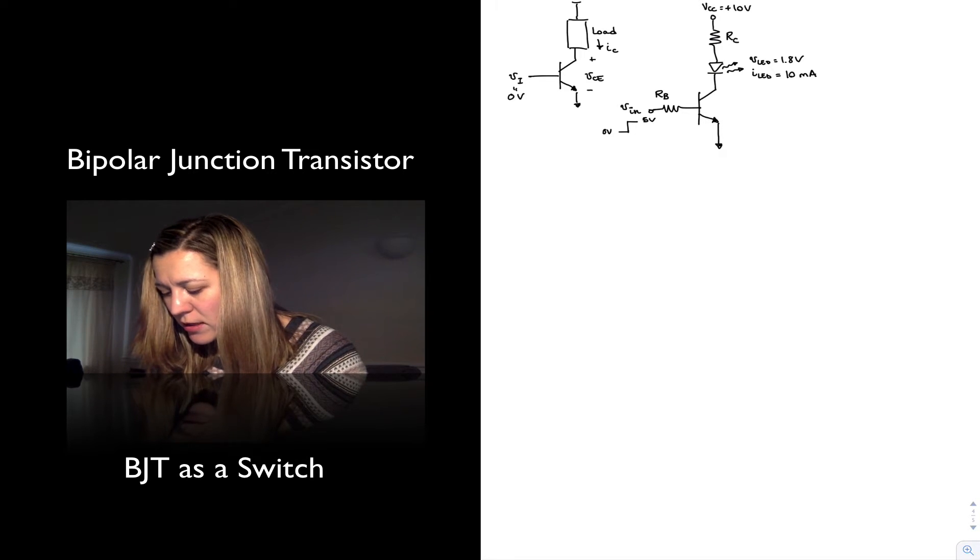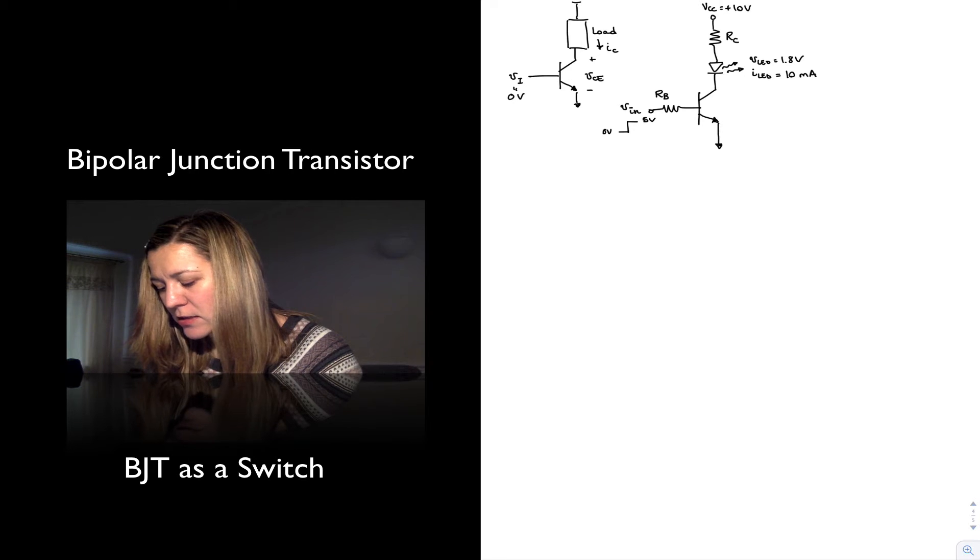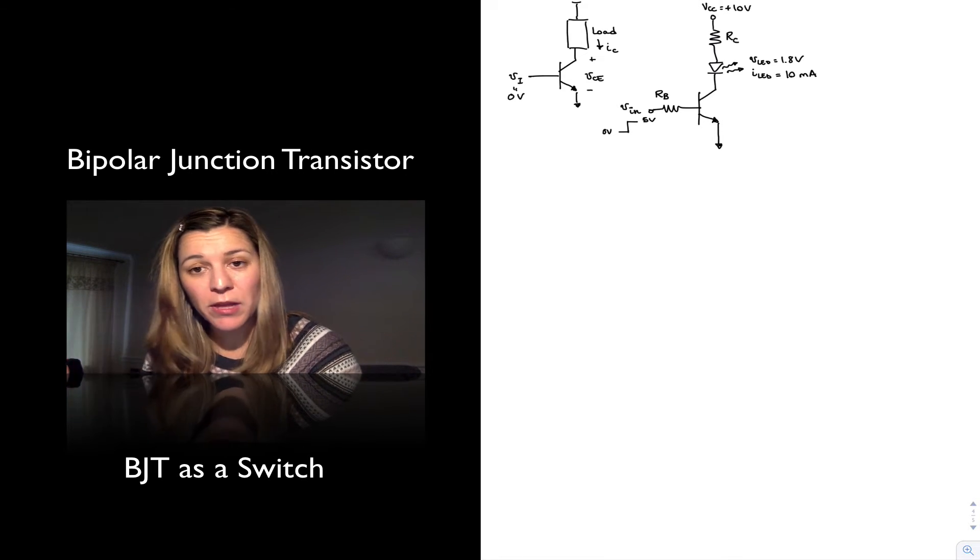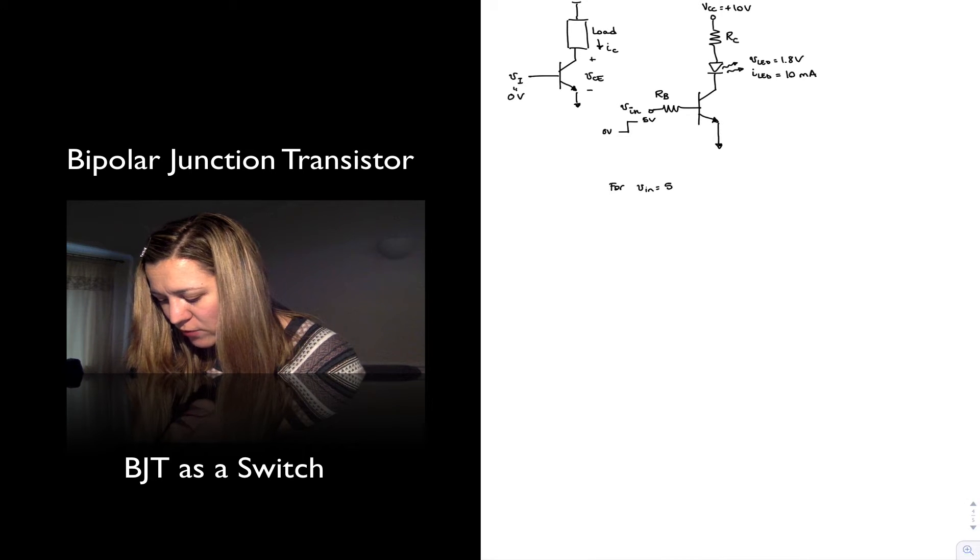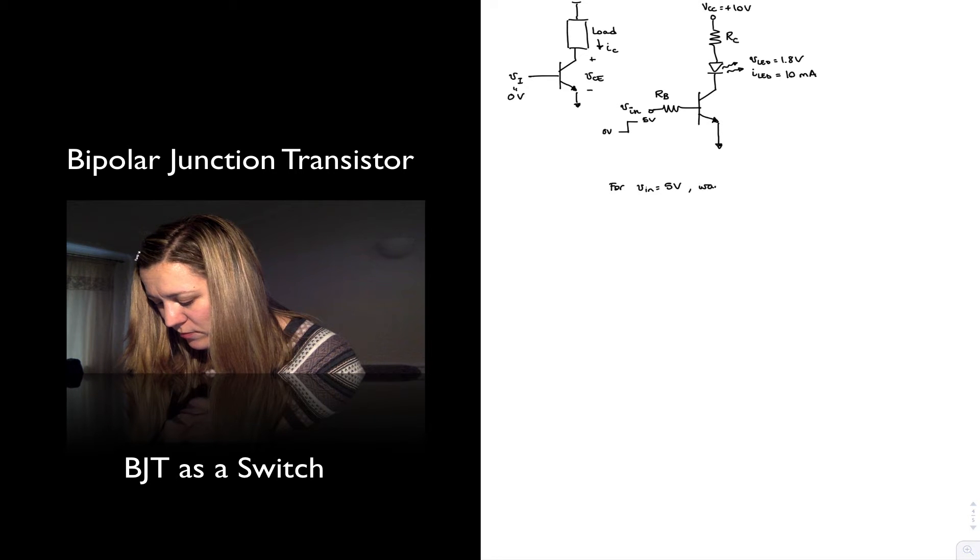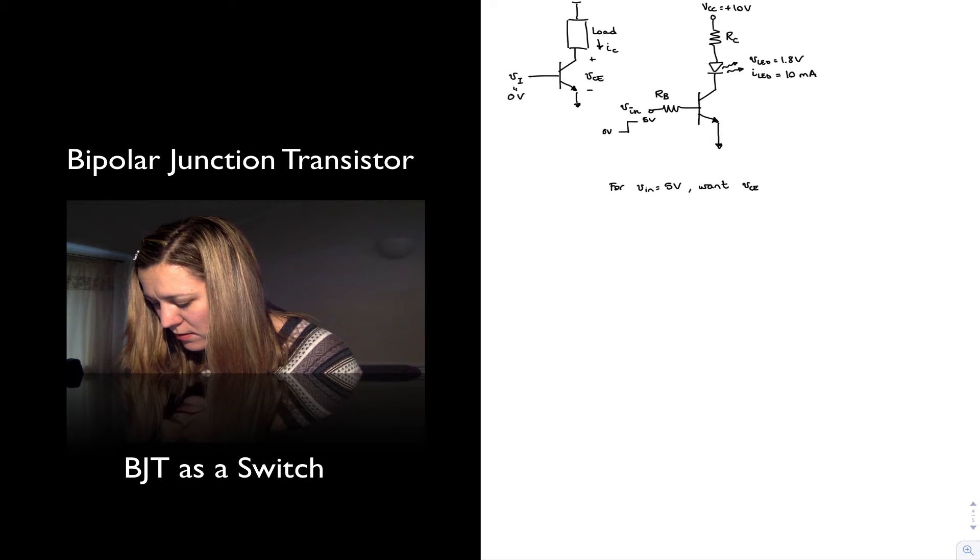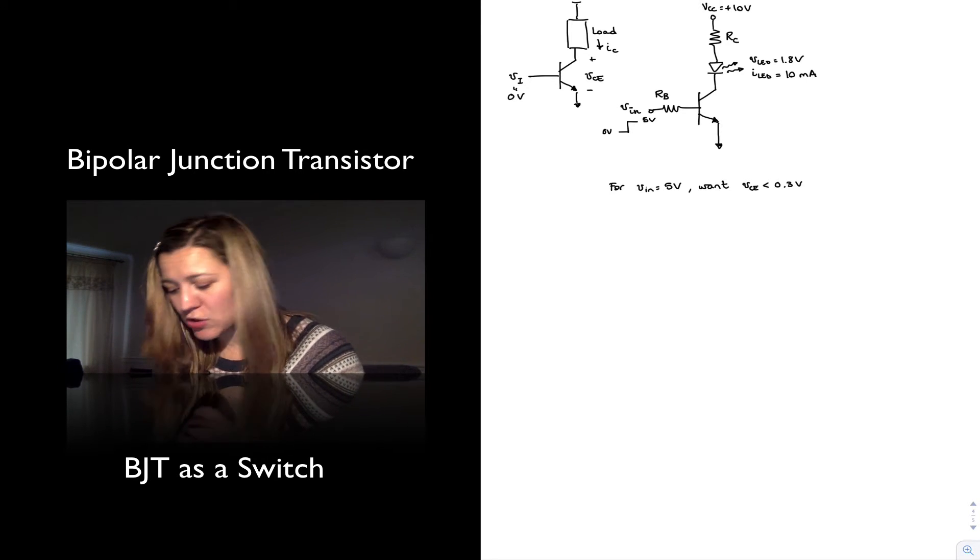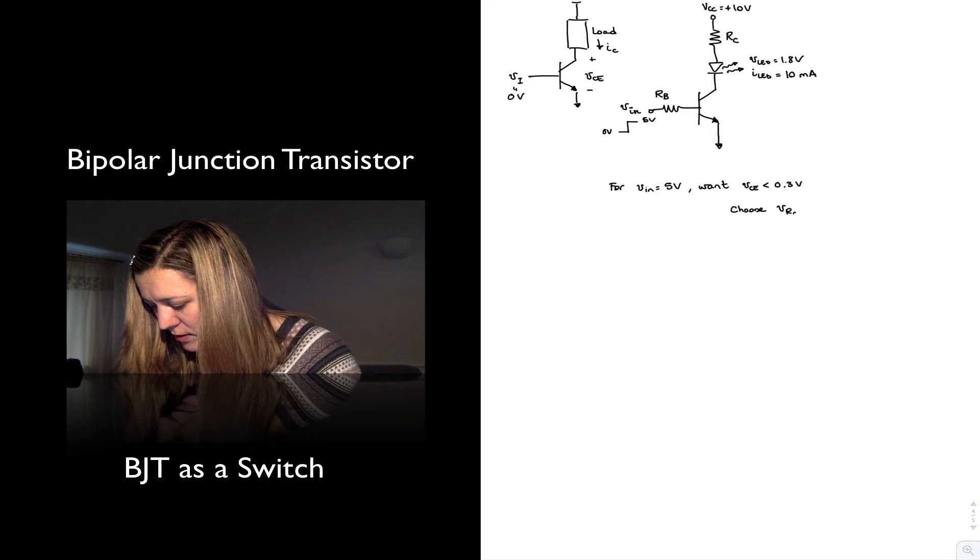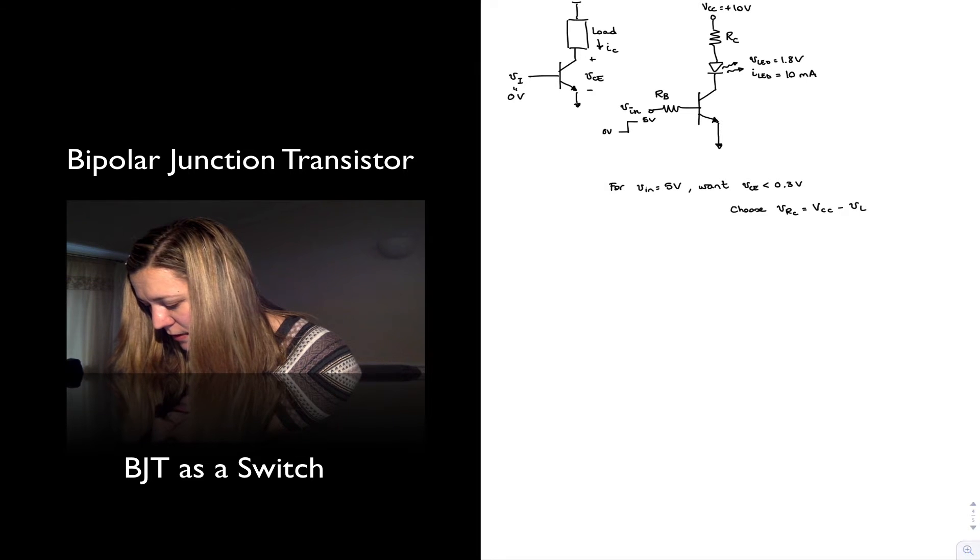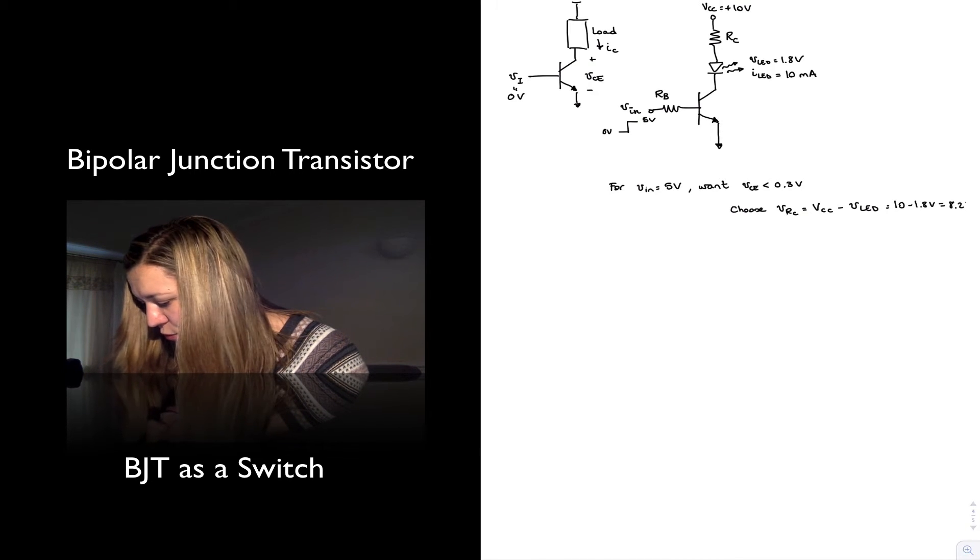So what we want is that when the switch is on, when the LED is on, the transistor will be in saturation mode. And the easiest thing for that is that we will make the voltage across the RC resistor equal to my supply 10 volts minus whatever drops across the LED. And so for an input voltage equals to 5 volts, I want VCE less than 0.3 volts. The easiest thing is just to make it 0 volts.